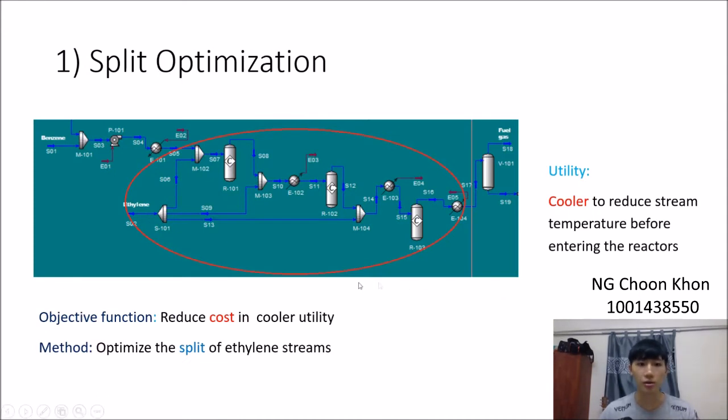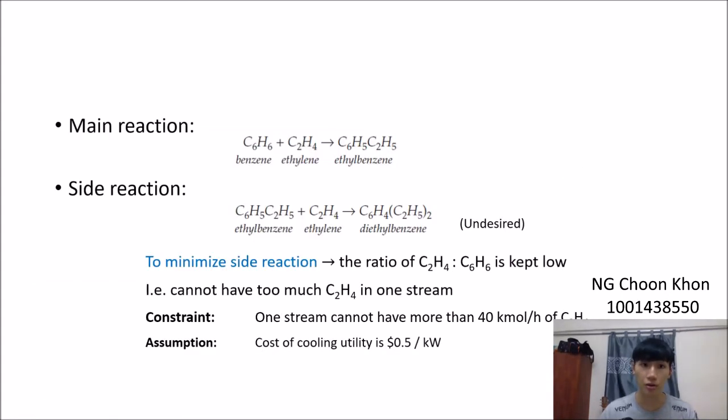In the first part of split optimization, we try to optimize the split of the feed ethylene before it enters the reactor. As you can see from this PFD, the feed ethylene goes through two coolers before entering the reactors. This is because the reaction is exothermic which favors lowest temperature. In this scenario, our objective function is to reduce cost in cooler utility. Before optimization, we need to consider the constraint.